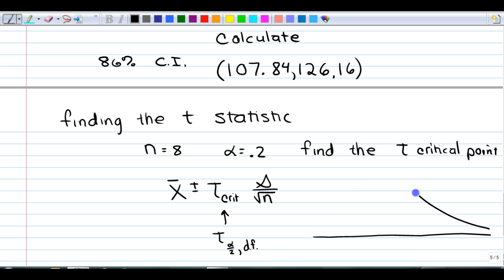The t-distribution is very similar to normal but it's flatter. And if alpha is 0.2, that means I'm putting 0.1 in each tail. And I want to know this value in a t-distribution.